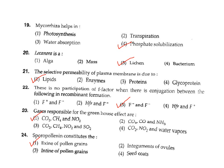Question 24: Sporopollenin constitutes what? Sporopollenin constitutes the exine — the outer layer of the pollen grain. Correct answer Option 1.